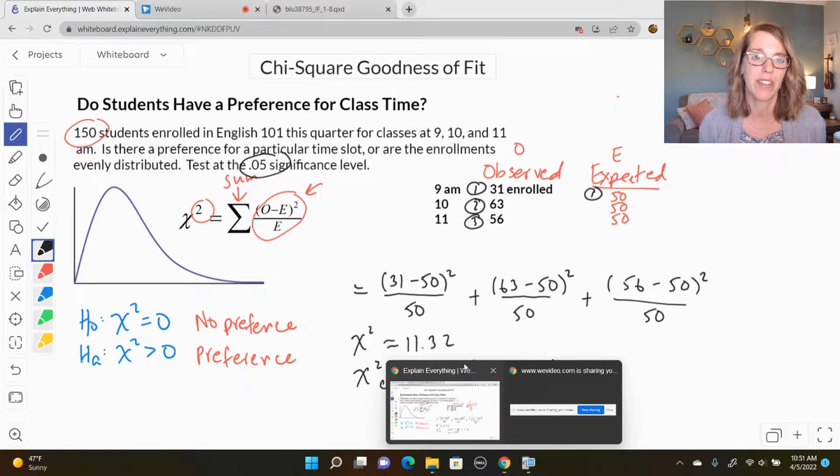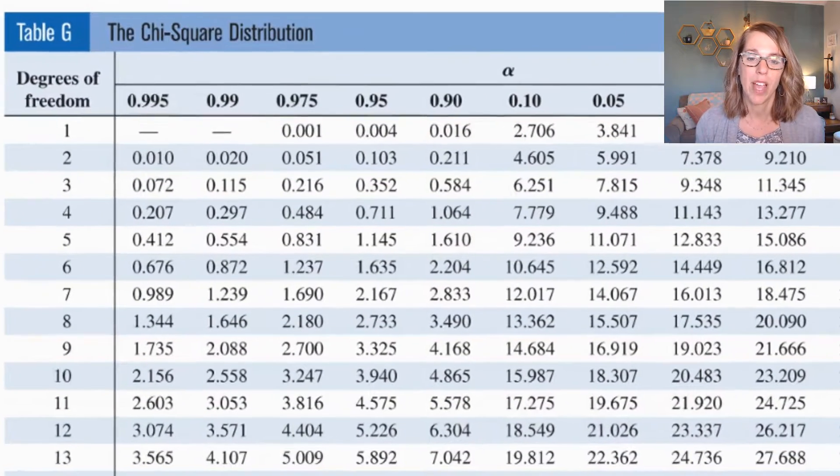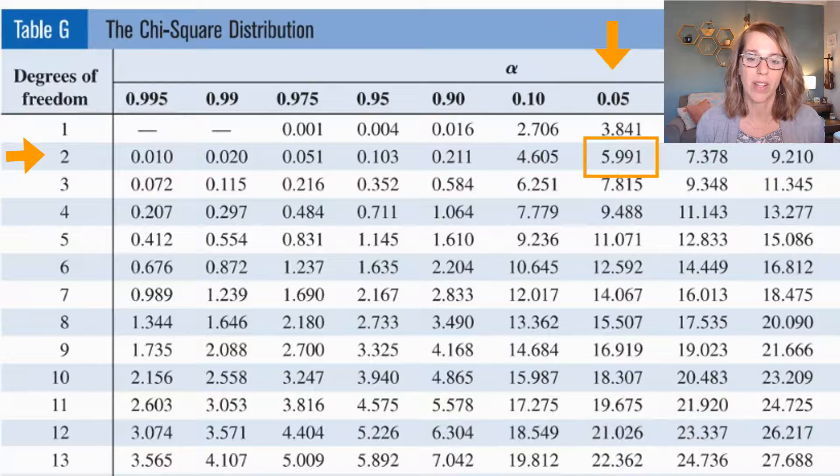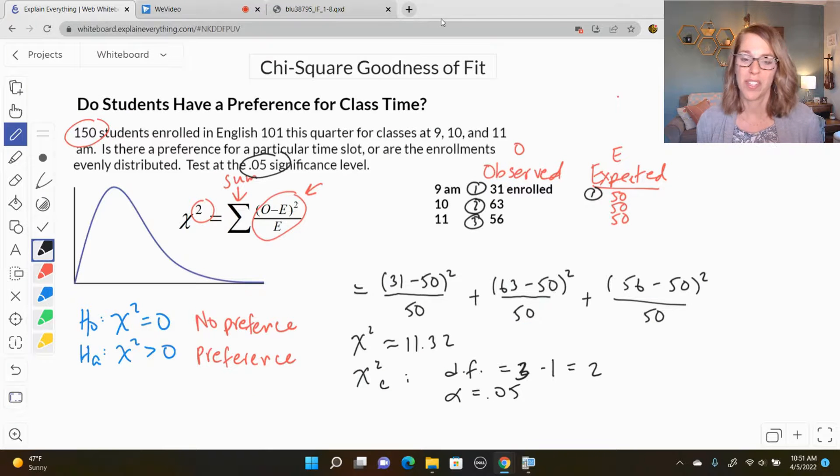So I've got my chi-square table. I'm going to look at the 0.05 column under two degrees of freedom. So that gives me 5.991 as the critical value. My critical value is 5.991. That's going to cut off my rejection region.